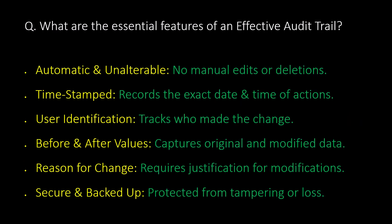What are the essential features of an effective audit trail? First, automatic and unalterable — meaning no manual edits or deletions. Second, timestamp records the exact date and time of actions. Third, user identification tracks who made the change. Fourth, before and after values captures original and modified data. Fifth, reason for change requires justification for modifications. Sixth, secure and backup — protected from tampering or loss.